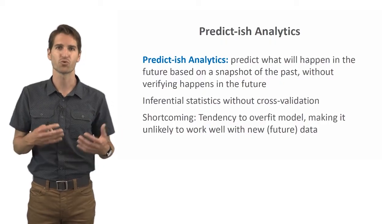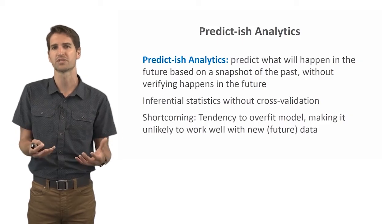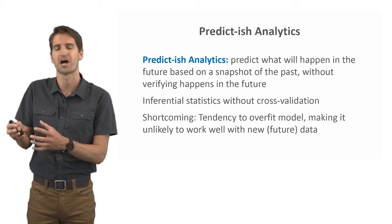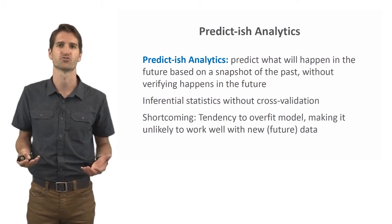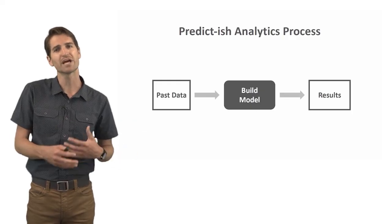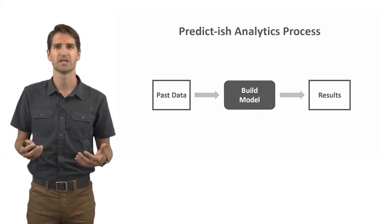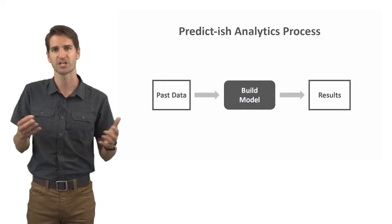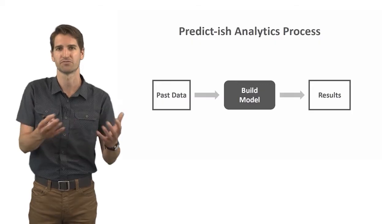One methodological shortcoming of predict-ish analytics is the tendency to overfit our models — making them more complex than they should be based on the data. If we were to apply these hypothetically on a future set of data, whatever model we derive wouldn't actually fit that well. In other words, it makes it unlikely that the model we developed will actually work well with new or future data. In terms of the analytical process, we have our past data, we build a model, we find our results — perhaps statistical significance from an inferential test and practical significance — but we're only looking at prior data while trying to make generalized inferences about the underlying population.